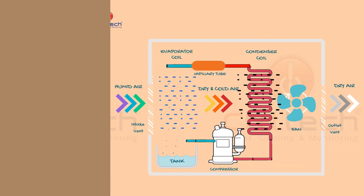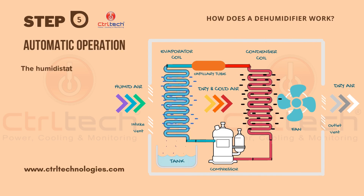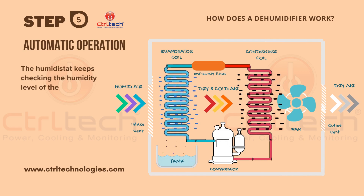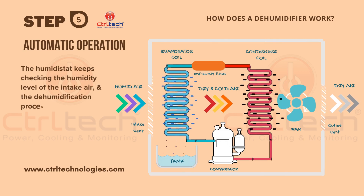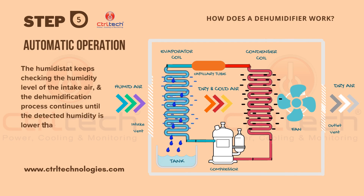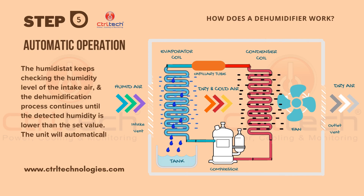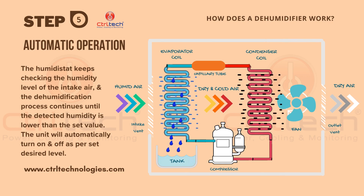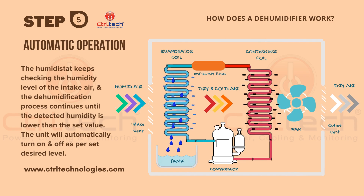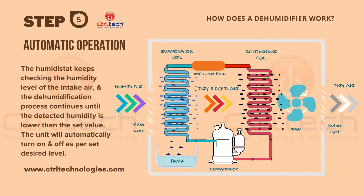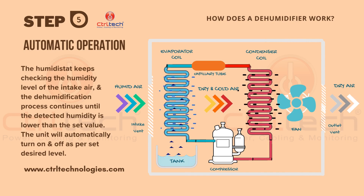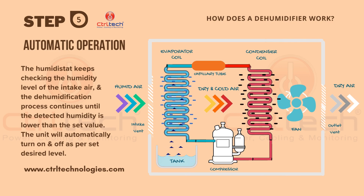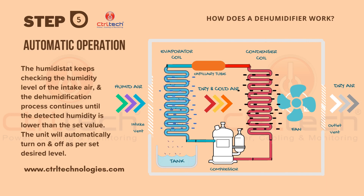What we saw from stage one to stage four is one complete cycle of dehumidification — the process of converting humid air into dry air. This process is repeated in a loop to feed dry air into the room continuously. The user can set the required humidity level from the control panel of the dehumidifier. The humidity stat keeps checking the humidity level of the intake air. When it detects that the humidity of the intake air is less than the set value, it stops the compressor and the fan. When it detects that the humidity level is higher than the set value, it starts the compressor and the fan automatically, ensuring automatic operation of the dehumidifier.